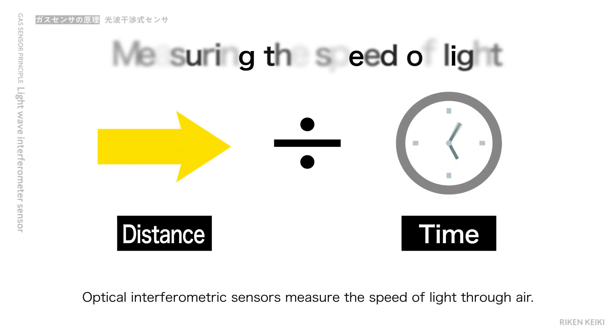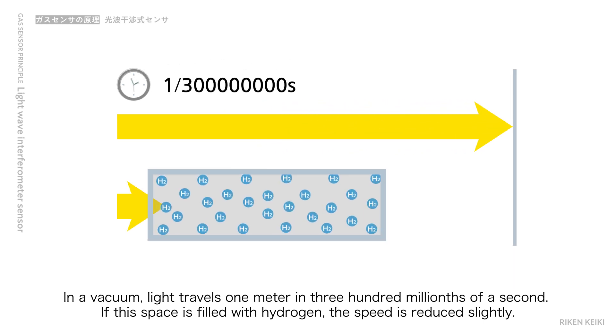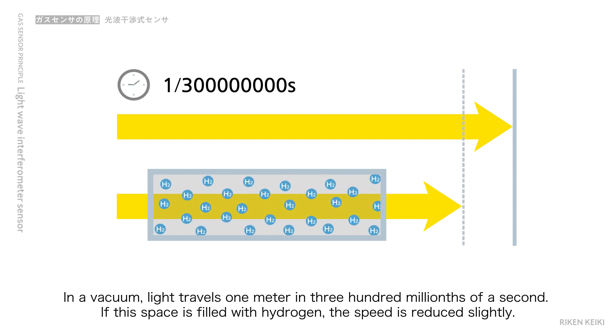Optical interferometric sensors measure the speed of light through air. In a vacuum, light travels 1 meter in 300 millionths of a second. If this space is filled with hydrogen, the speed is reduced slightly.